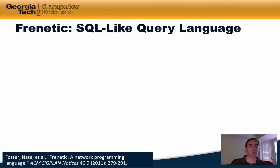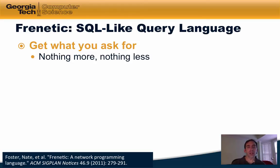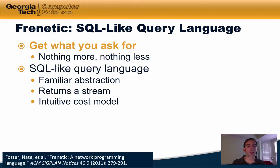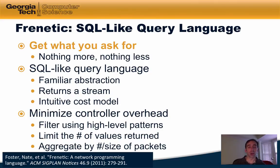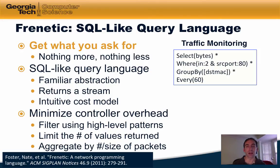These primitives have been put together in a programming language for SDNs called Frenetic, which is a SQL-like query language that allows the network programmer to read network state. Frenetic allows the programmer to get what they ask for and see nothing more and nothing less. It offers a familiar abstraction and returns a stream of packets over which the programmer can issue subsequent queries. The Frenetic runtime is designed to minimize controller overhead — it filters traffic using high-level patterns, limits the number of values returned, and aggregates queries according to the number and size of packets.